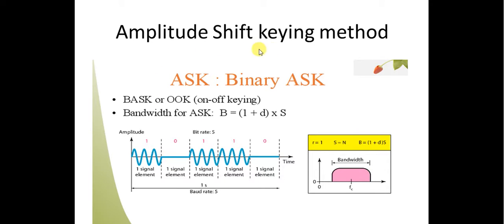For the Amplitude Shift Keying method, the digital data is changed into amplitude. For a 1, the amplitude will be high, and for a 0, the amplitude will be low. You can see here: for 1 the amplitude is high, for 0 the amplitude is low.